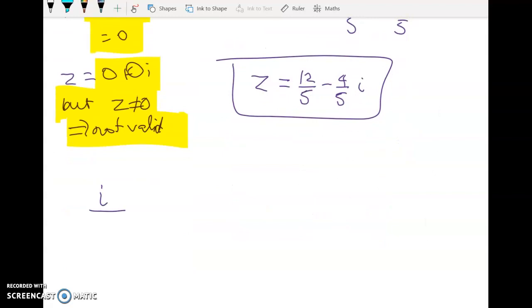So go back to the original equation. We've got i over z plus 3 over the conjugate of z and we want that to equal 1. So we've got i over 12 fifths minus 4 fifths i plus 3. And yes, you can probably put this in your calculator, but that would feel wrong.